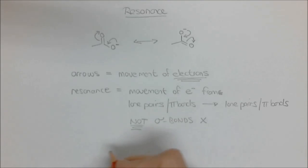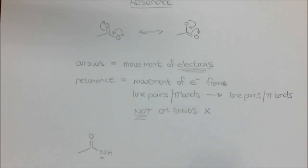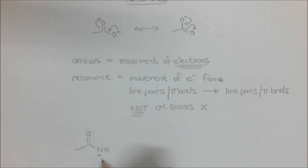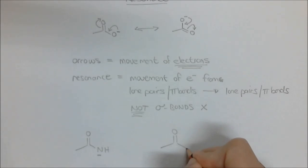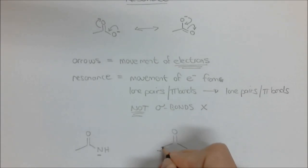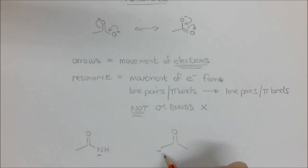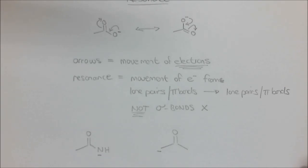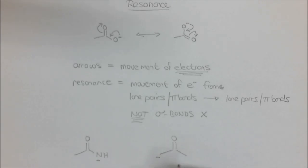I'll leave you with two questions. First, draw out the resonance structure of the compound with NH and a minus on the nitrogen — this is very similar to what we've done. The second, more challenging one: take acetone with a minus charge on a carbon. If you draw the Lewis structure, that carbon has only two hydrogens on it, and the negative charge means there's a lone pair on that carbon — draw its resonance structure. Then find the video on my YouTube channel called 'Consequences of Resonance' to take this to the next level.